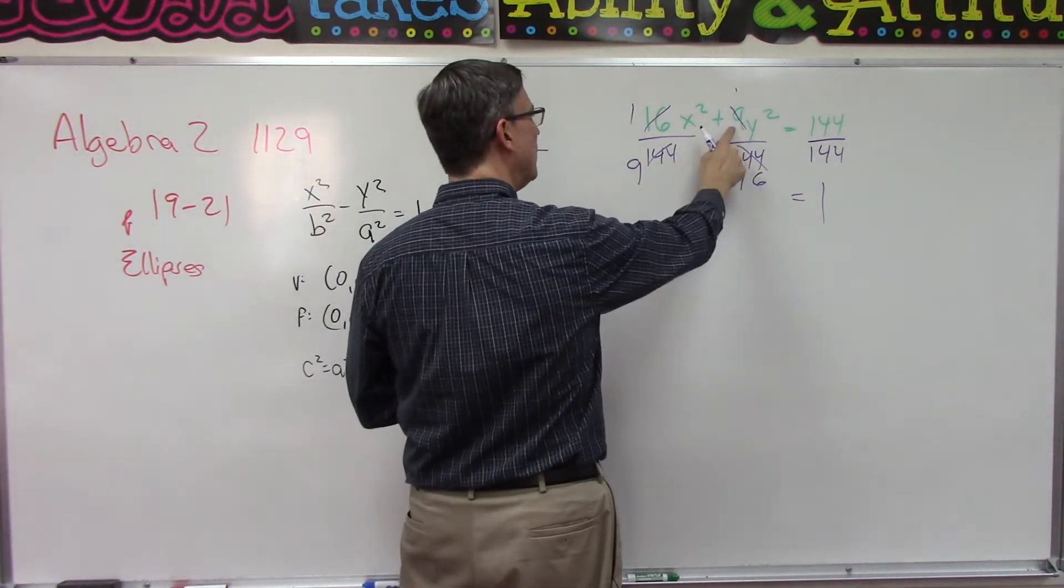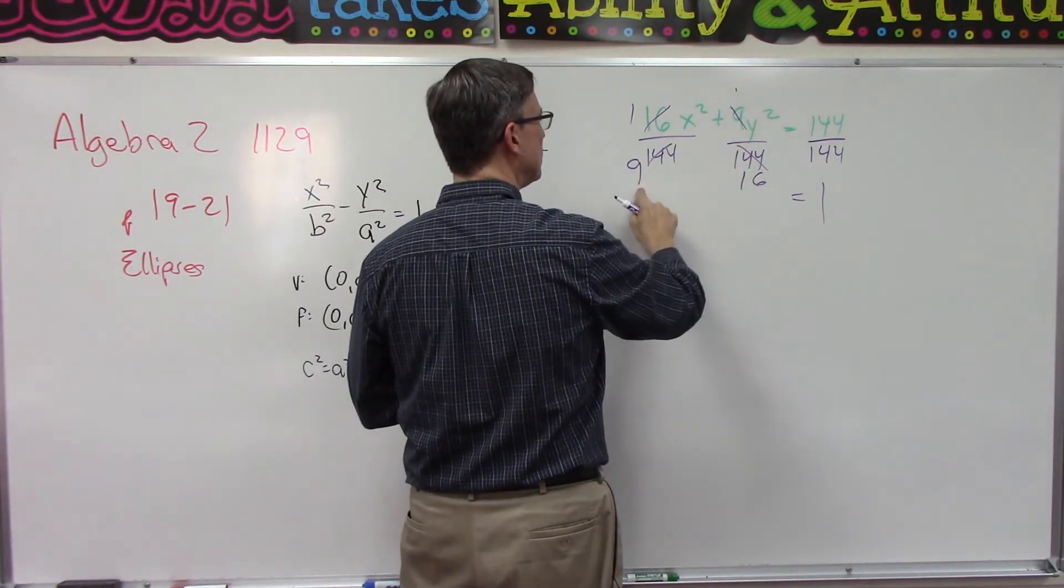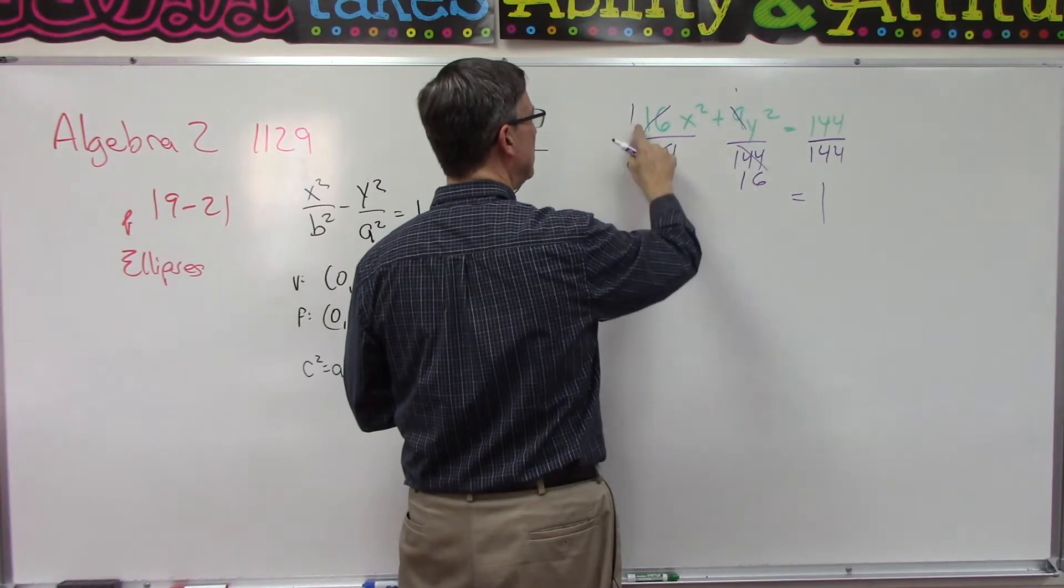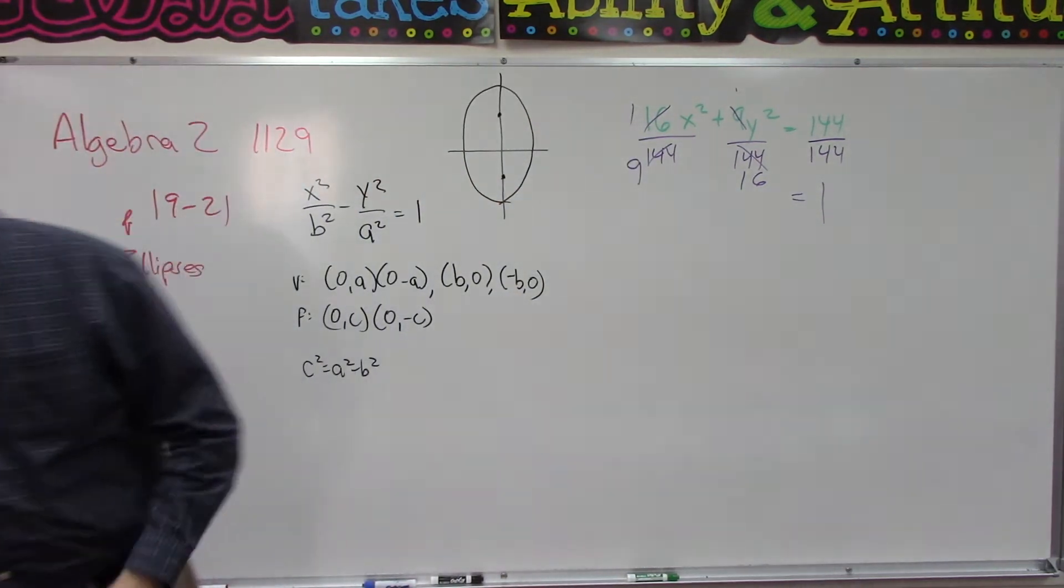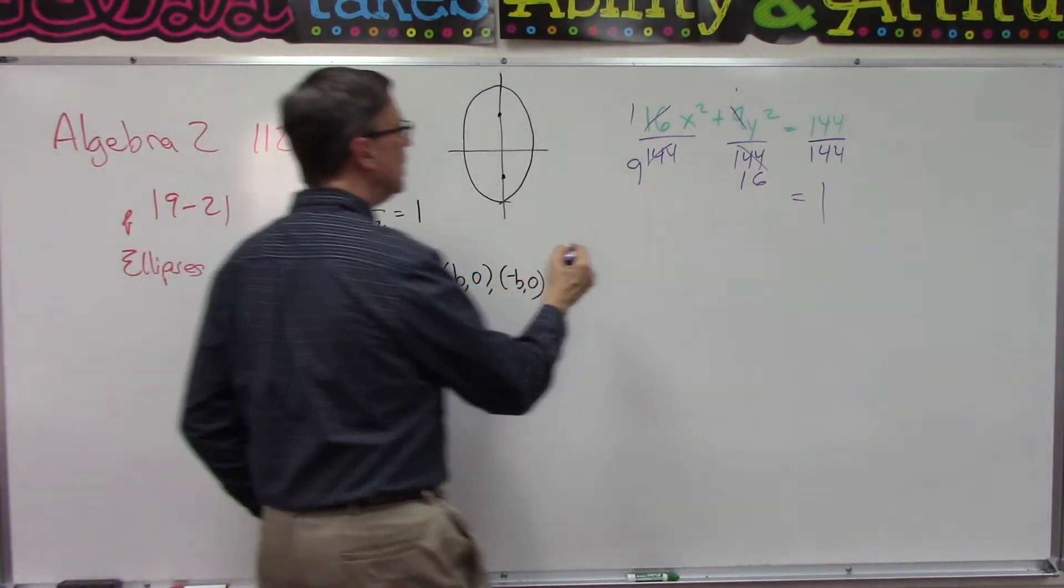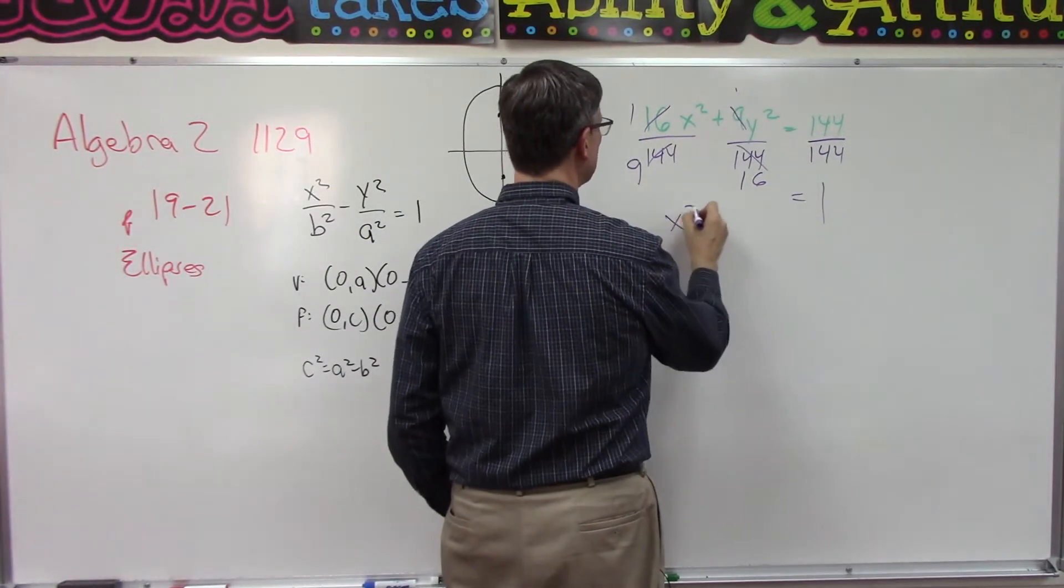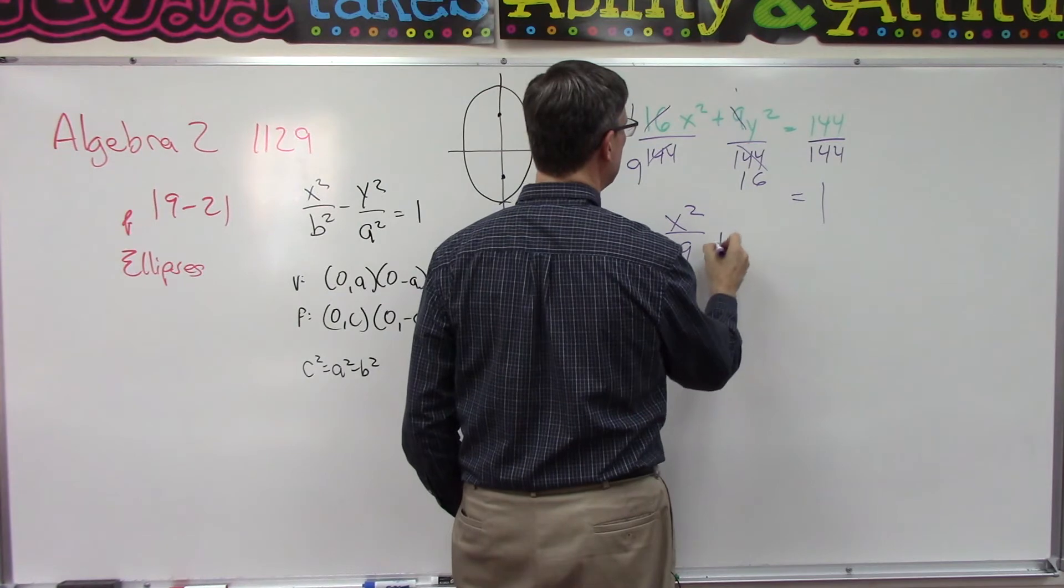That often happens—whatever this coefficient is here becomes the denominator. This coefficient becomes the denominator here. Let me simplify this: we have x squared over 9 plus y squared over 16 equals 1.